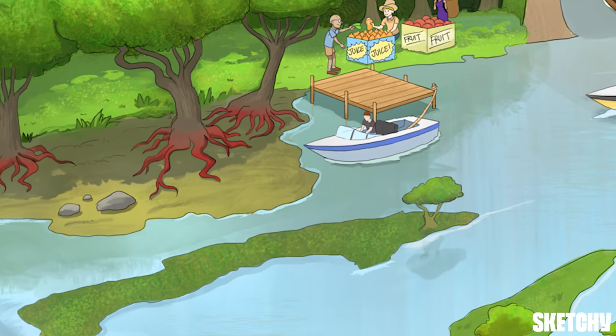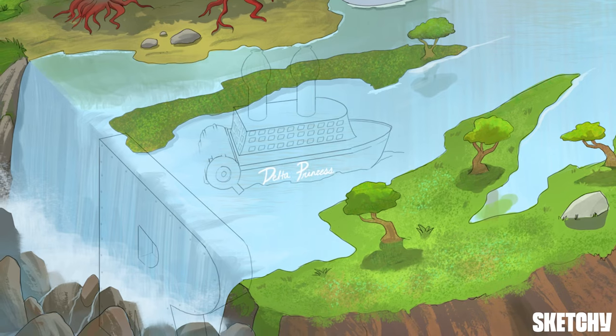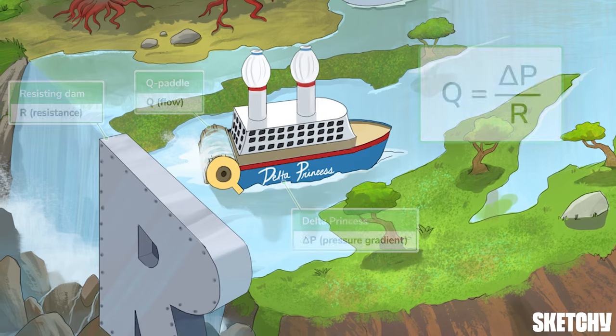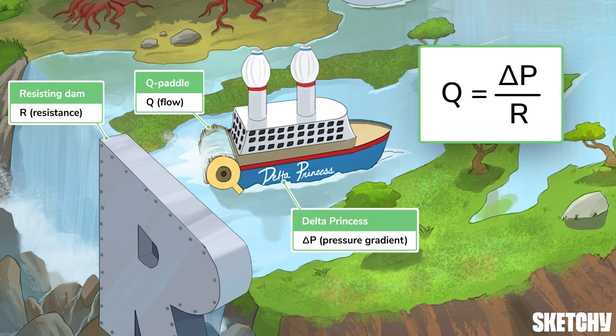Now that we know all about velocity, let's dive deeper into the dynamics of blood flow. Blood flow is connected to pressure and vascular resistance, expressed by the equation Q equals delta P over R. In other words, blood flow will increase with a greater pressure difference and decrease with more resistance. We've added Sketchy's own delta princess to the mix with its patent-pending Q-shaped paddle. Hop on as we flow through the rest of the sketch.